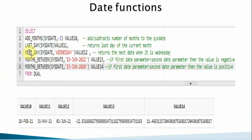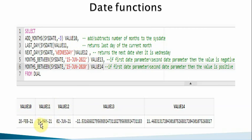The ADD_MONTHS function adds or subtracts months from a date. For example, ADD_MONTHS(SYSDATE, -3) — if the current month is May, three months before is February. The LAST_DAY function returns the last date of the current month. LAST_DAY(SYSDATE) with the current month being May returns May 31st.